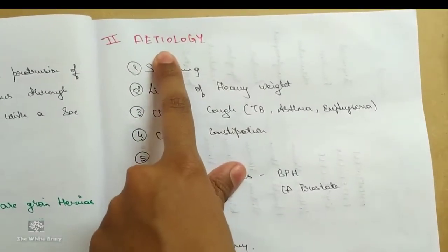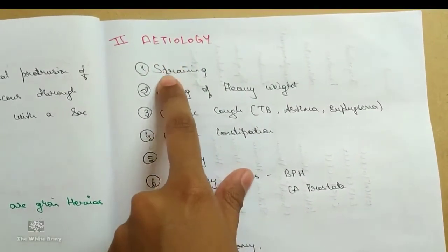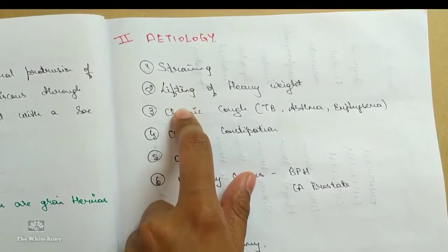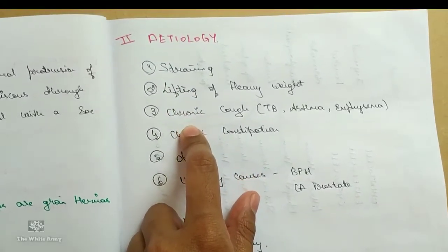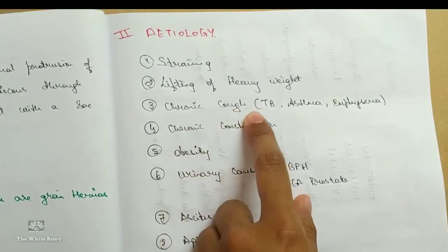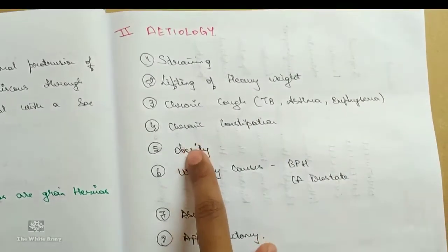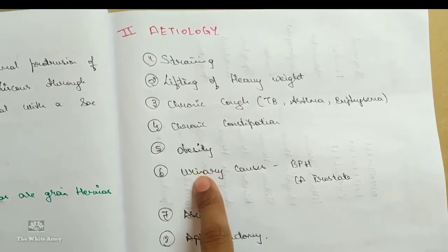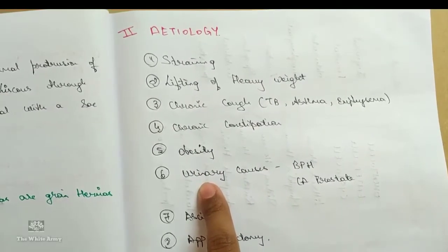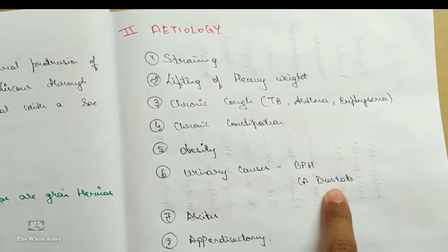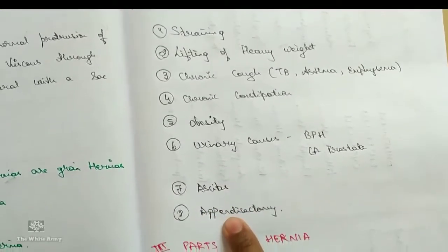Etiology for hernia: it can be straining, lifting of heavy weight, chronic cough, conditions like tuberculosis, asthma, emphysema, chronic constipation, obesity, urinary causes like benign prostatic hypertrophy, CA prostate, ascites, appendicectomy.